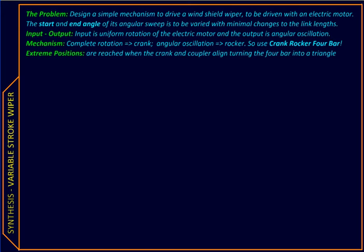The goal or output motion for a wiper is of course angular oscillation, while the input will be coming from a uniform rotation of an electric motor. Now, completely rotating links are called cranks, while links in angular oscillation are called rockers. So let us start with a simple crank rocker four bar.